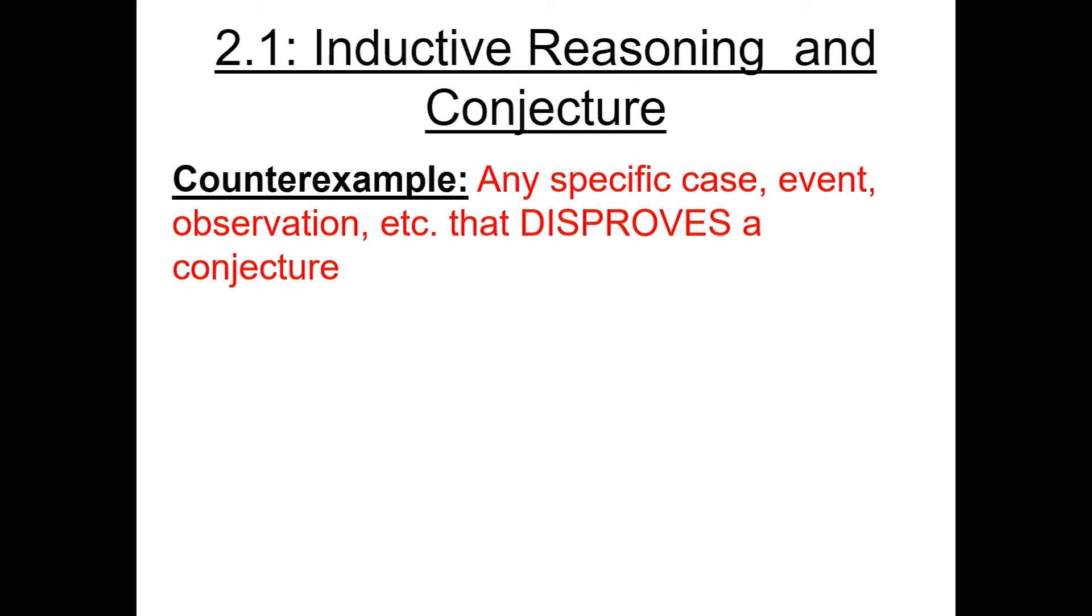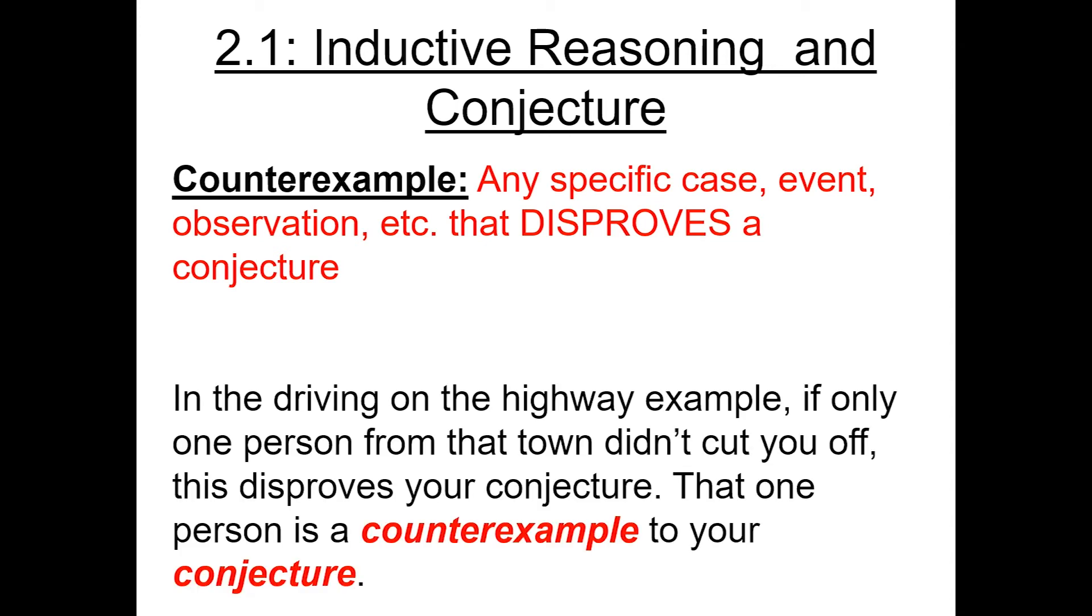In the driving example, suppose you're driving along after those two people cut you off, and then later somebody else in that town did not cut you off. Well, your conclusion that all of the people in that town are going to cut you off is wrong because one person didn't. So that is a counterexample to that conjecture.